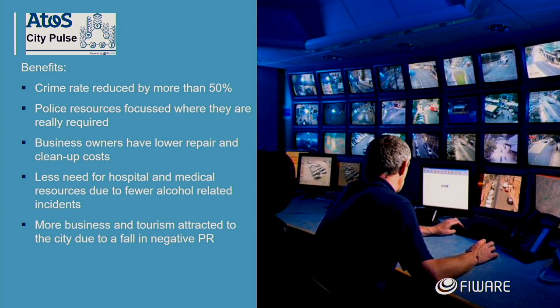The officer gets the right pictures and can decide to send police proactively, because they get the information: in five minutes it will become critical at this point of the street. Or they have the ability to increase the level of light — Eindhoven is the headquarters of Philips and they have lighting by segment in the street. In more than 80% of cases, it is sufficient to increase the light to de-escalate an upcoming critical situation. The crime rate has been reduced by more than 50%, damages in bars have been reduced, police are used more efficiently, and the image of the street and city has increased.